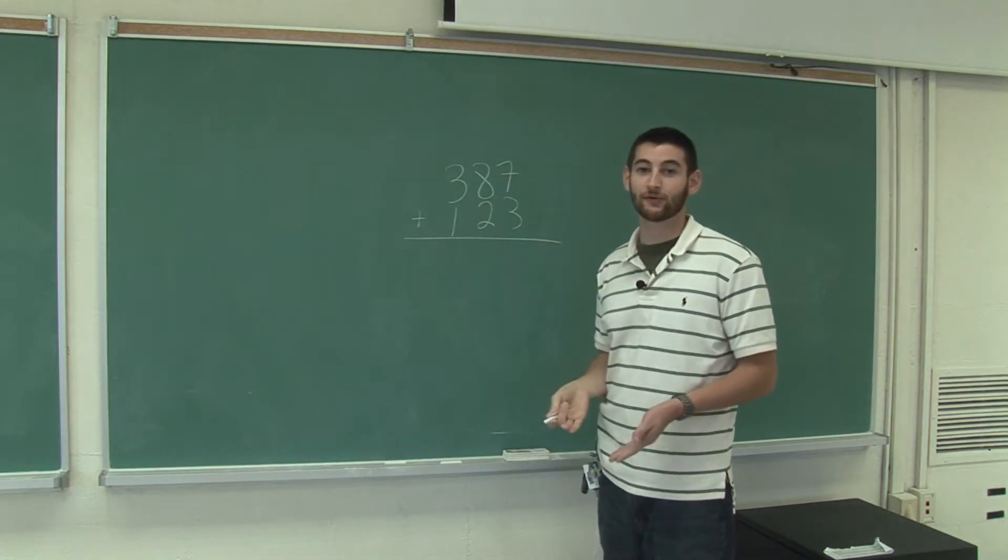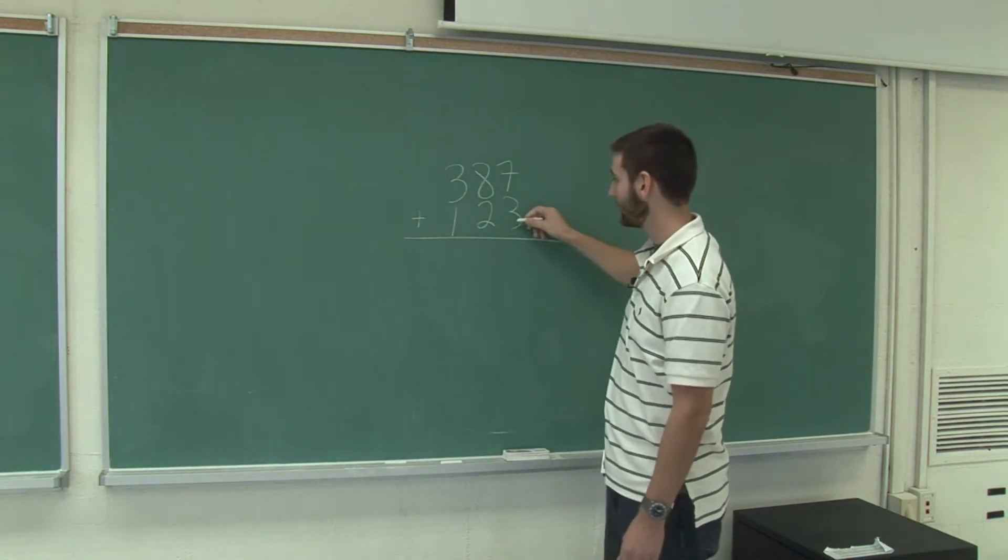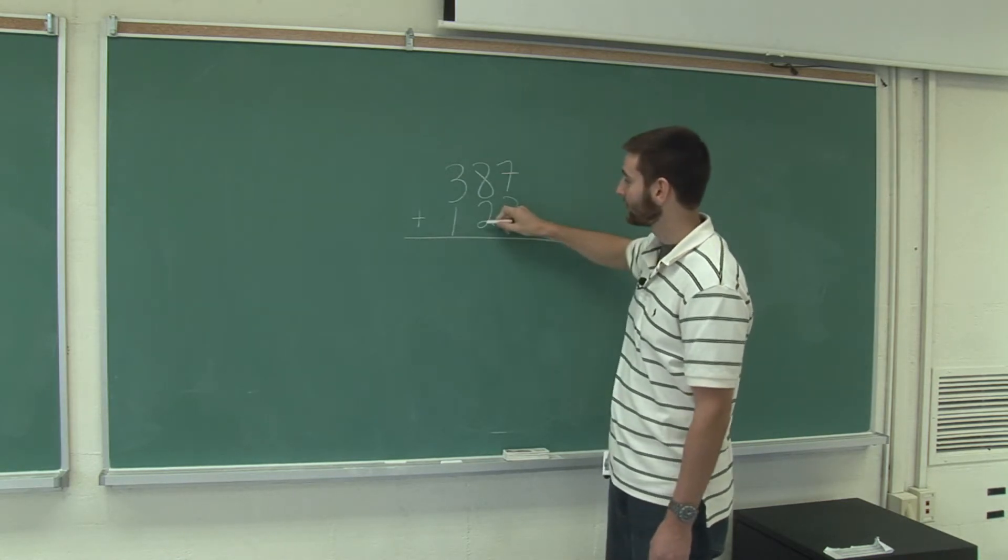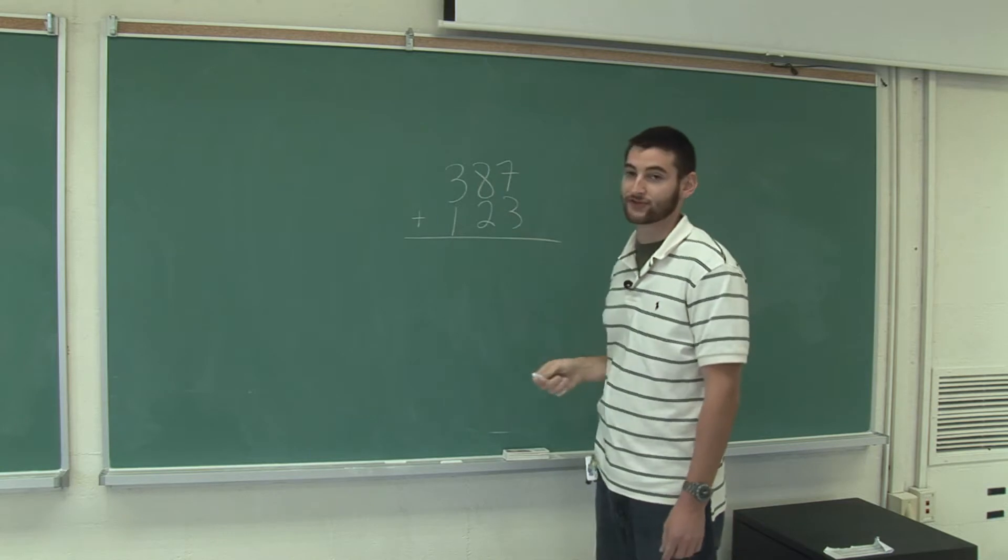Okay, so the first thing we do is start with the unit column, which is this column. The value in this column represents single units, one. This column represents tens and this column represents hundreds.